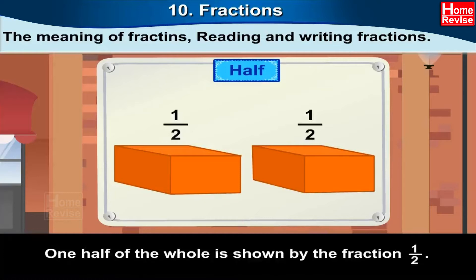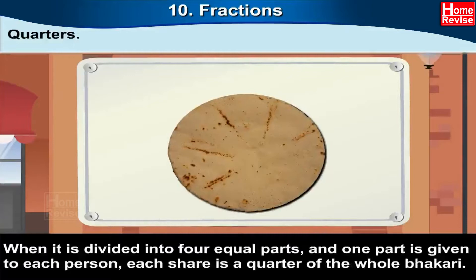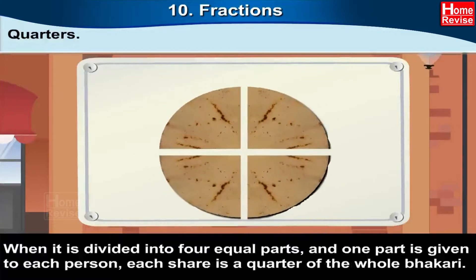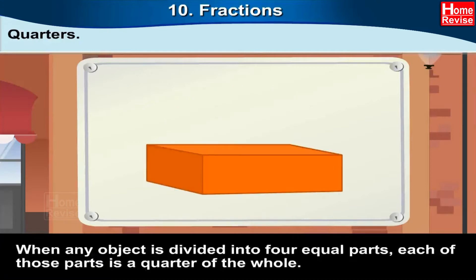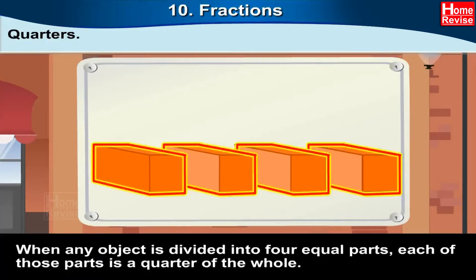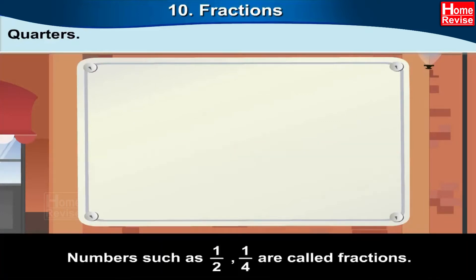One half of the whole is shown by the fraction one upon two. Quarters — one bhakri has to be divided equally between four people. When it is divided into four equal parts and one part is given to each person, each share is a quarter of the whole bhakri. When any object is divided into four equal parts, each of those parts is a quarter of the whole. One quarter is shown by the fraction one upon four.